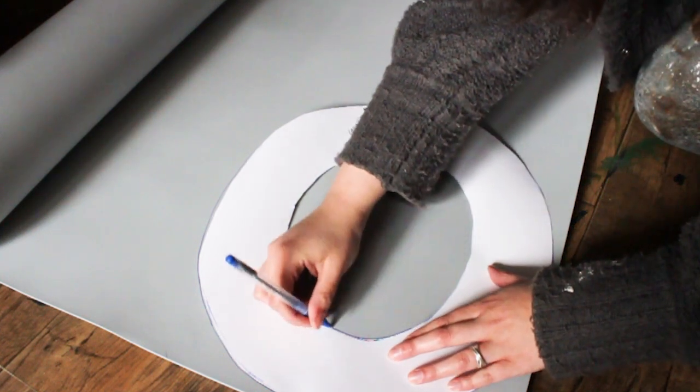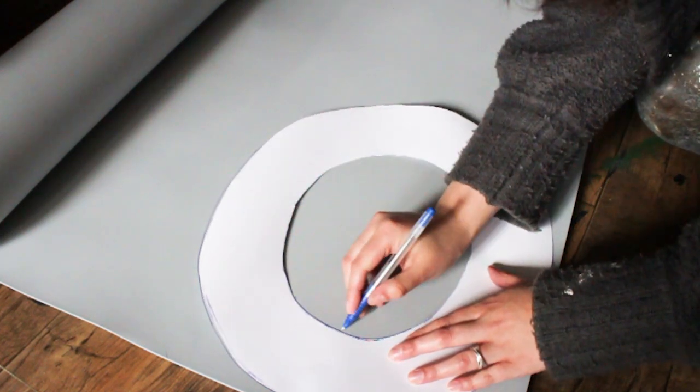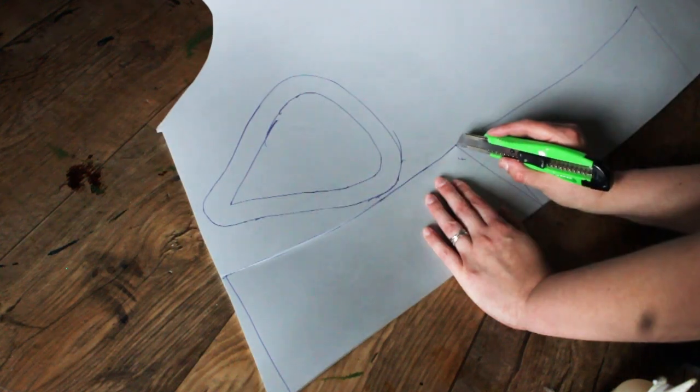I traced the pattern on 4mm and 5mm EVA foam and cut it out using a box cutter.